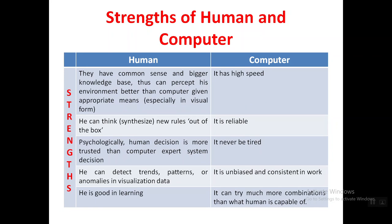The first strength of human beings is that they have common sense and a bigger knowledge base, so they can perceive the environment better than the computer, especially in visual forms. Based on these two advantages, humans can behave better and give more life-like results. The next point is they can think new rules out of the box — based on their knowledge, humans can think beyond it, which is why we have invented so many things.